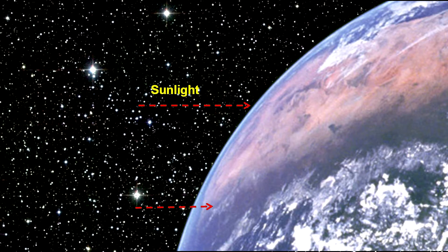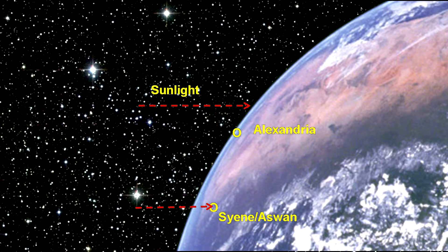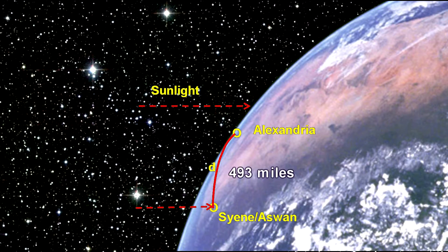For his two locations, Aristophanes chose Alexandria and Syene, now Aswan. He knew how far apart these two cities were, 493 miles in today's units.